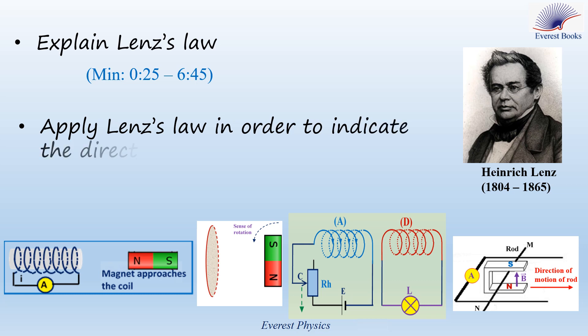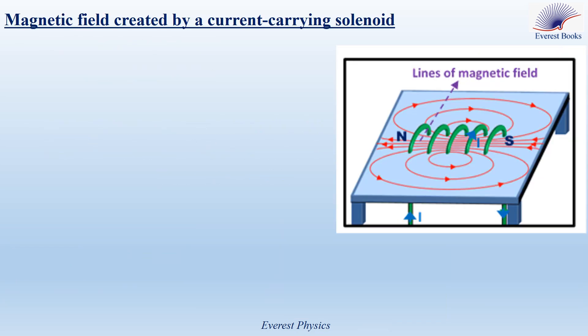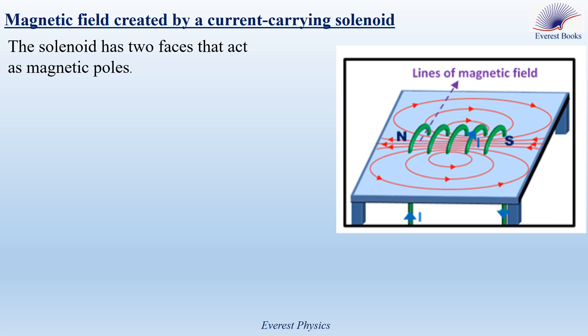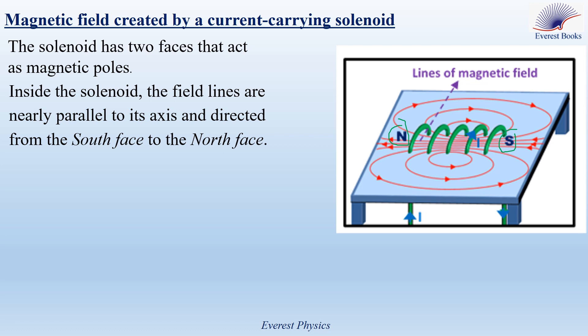We will apply Lenz's Law in order to indicate the direction of the induced current. Before explaining Lenz's Law, let's remind you of the magnetic field created by a current-carrying solenoid. The figure shows the magnetic field lines inside and outside the solenoid. The solenoid has two faces that act as magnetic poles — the north face and the south face. Inside the solenoid, we care about the field lines, which are nearly parallel to its axis, so the magnetic field is considered uniform. These lines are directed from the south face to the north face.